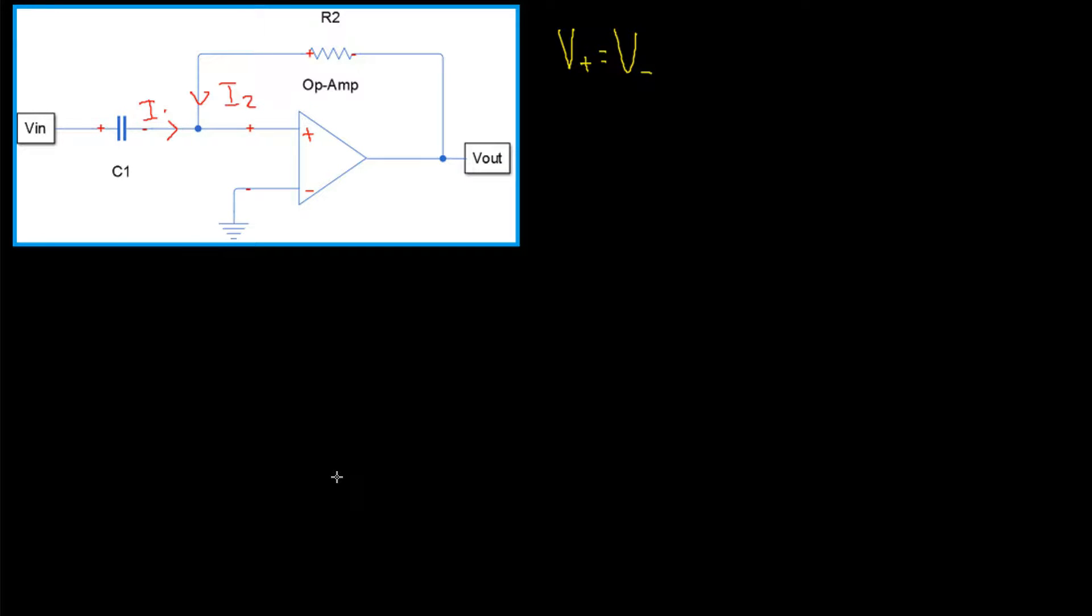In the previous video, I arbitrarily chose directions for currents entering and leaving the nodes. In this video, I'm going to show you that the directions of the currents don't matter at all. No matter which directions you choose, your equations will come out correct. So, in this circuit, let's say that all of the currents are entering the node and none of the currents are leaving the node. In this case, we have I1 plus I2 equals 0.